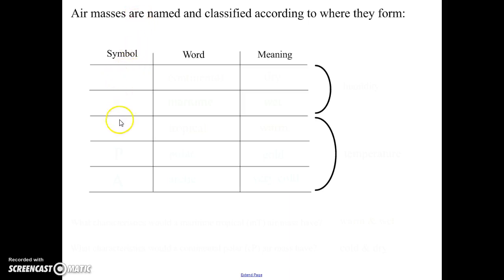There are a number of symbols that we use when we're naming air masses. The first two symbols are a lowercase c and a lowercase m.